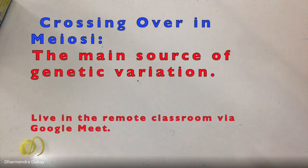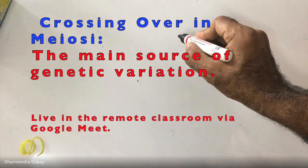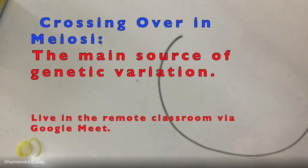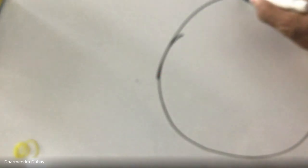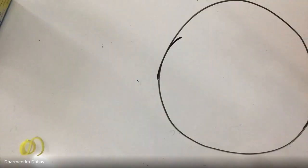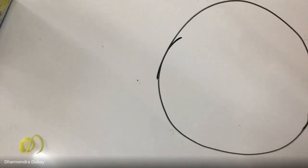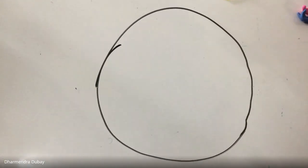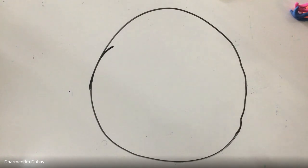Crossing over in meiosis occurs in prophase one, and in prophase one the nuclear membrane is still in place. So here, let this circle represent the nuclear membrane.